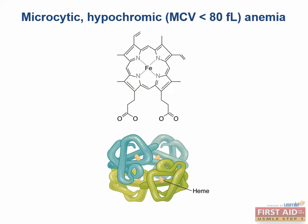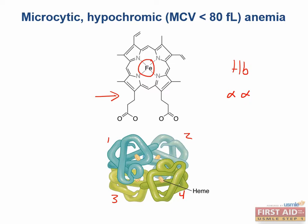Hemoglobin is made up of two things: a heme group and a globin molecule. The heme group itself is made up of iron and protoporphyrin. Globin is a tetrameric protein with four parts, each containing a heme group. In utero and soon after birth, hemoglobin F is predominant, consisting of two alpha and two gamma globin chains. After a few months, gamma subunits are replaced by beta subunits, forming hemoglobin A — two alpha and two beta subunits — which remains predominant throughout adult life.